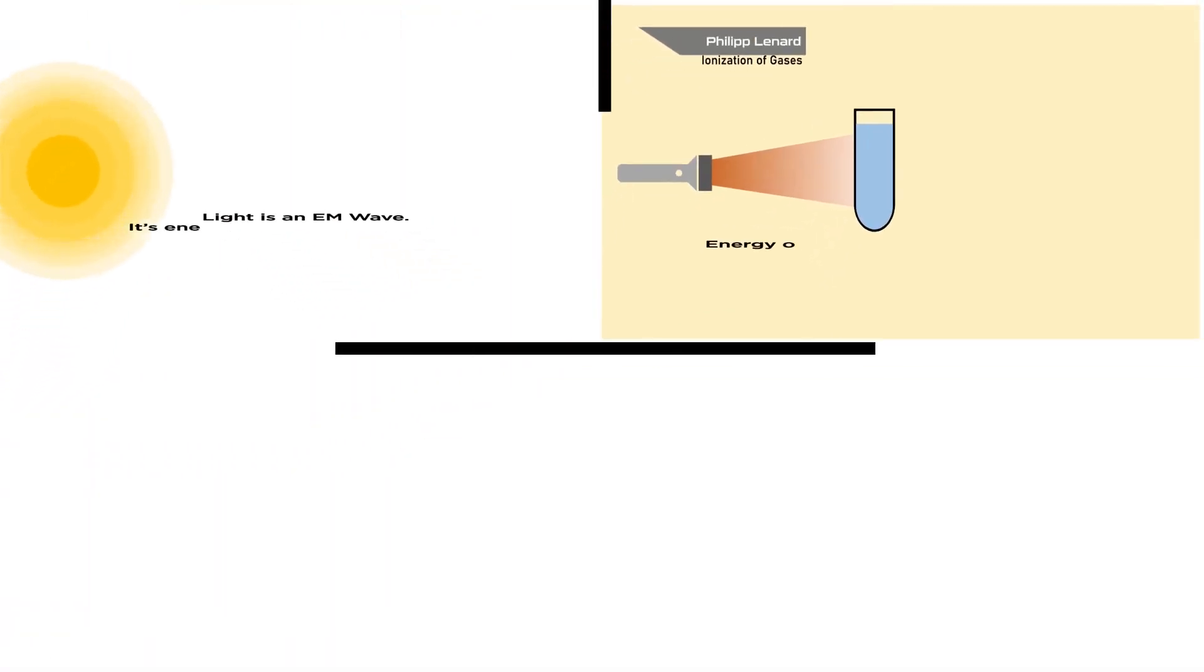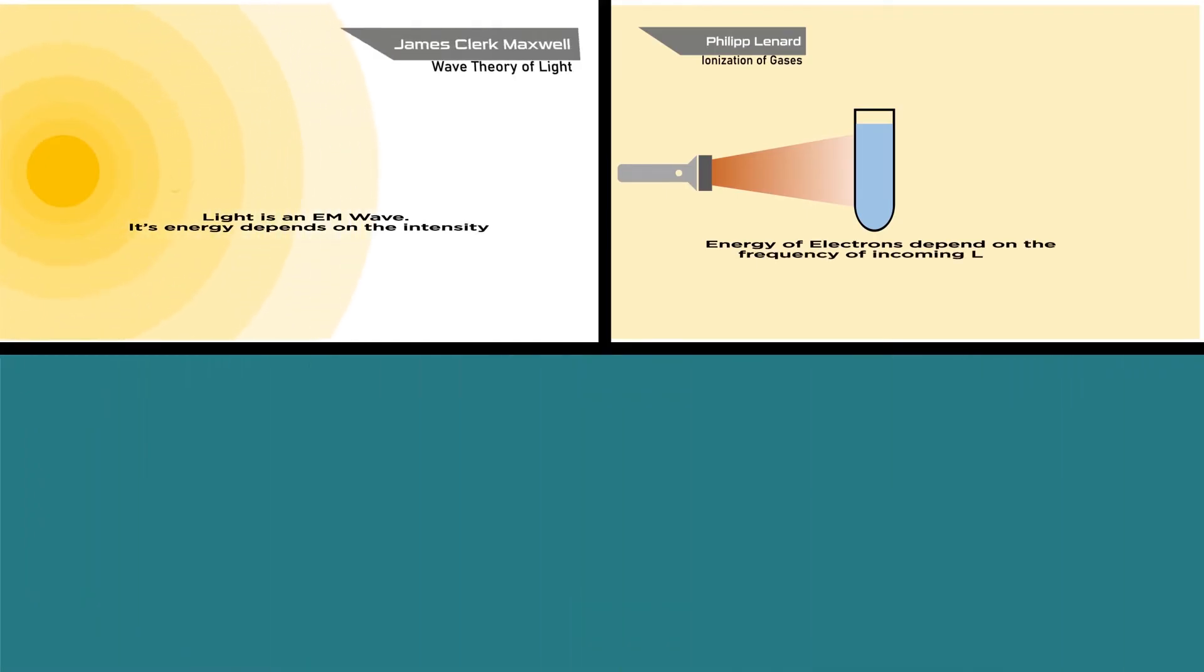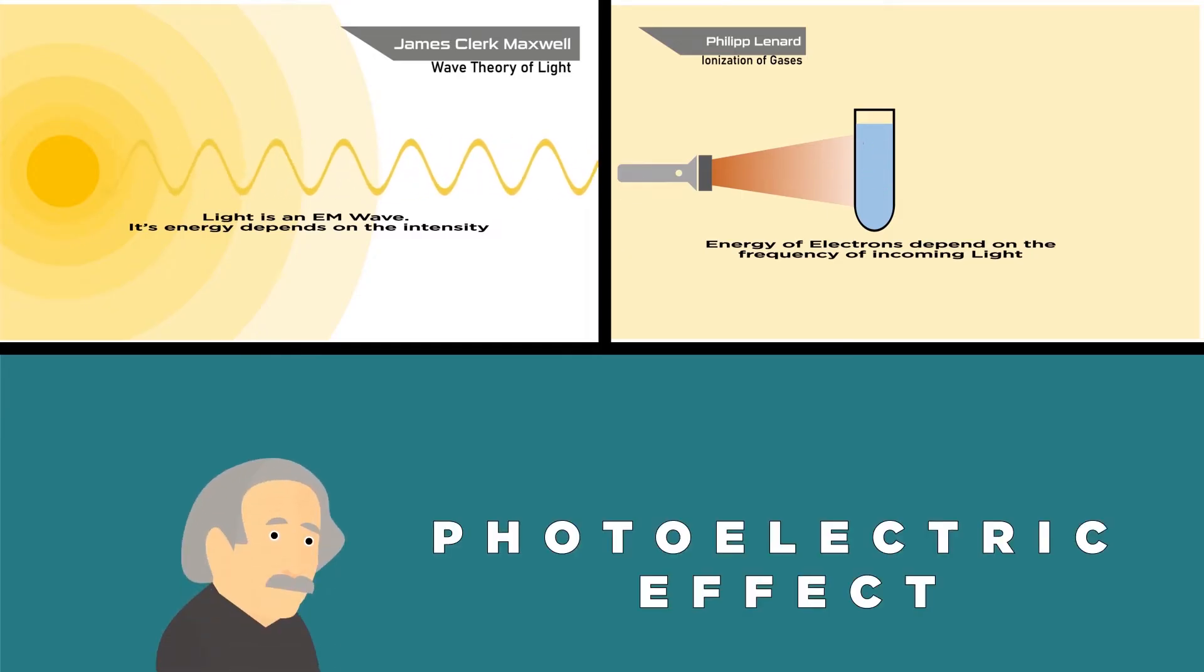Leonard's observation was exact opposite of Maxwell's wave theory of light, which made it a puzzle that energy of light depends on intensity or frequency. Albert Einstein explained this puzzle through a phenomenon of light called photoelectric effect.